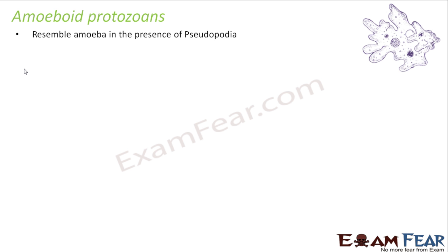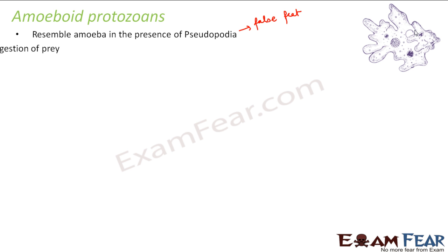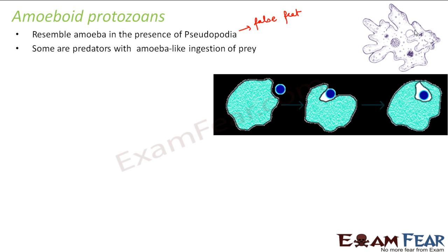Let us start with amoeboid protozoa. Amoeboid means something similar to amoeba. They resemble amoeba in the presence of pseudopodia. Pseudopodia are the false feet of amoeba — extensions of the cytoplasm that act like feet. They help not only in locomotion but also in ingesting food. Some are predators with amoeba-like ingestion of prey. Let us suppose this is an amoeba and a blue-colored structure is the prey — how do they catch it?